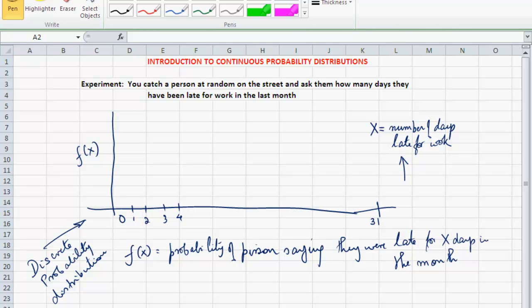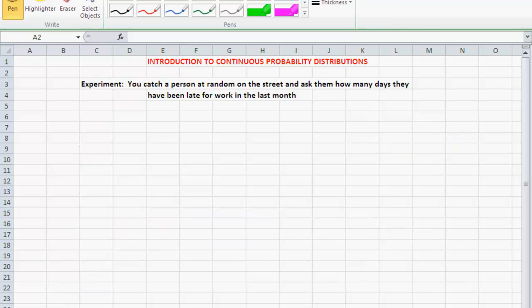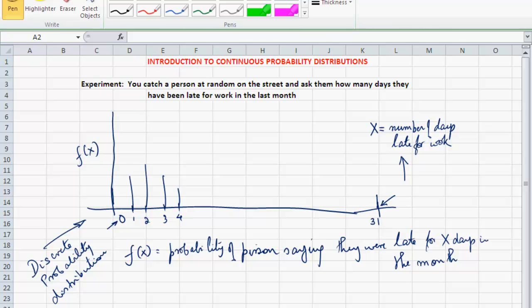Since the random variable X is a discrete random variable, the probability distribution resulting from this is called a discrete probability distribution. So we would have a bunch of spikes, each spike representing the probability of the person saying that they are late for that many. I would expect that in the Washington area, the probability of the person saying that they are 0 days late for work in the previous month would be very low, just as I would expect the probability of the person saying that they are 31 days out of 31 days late in the month would also be extremely low. So I would expect most of the spikes to be between 0 and 4 and the other spikes would be a very low height.